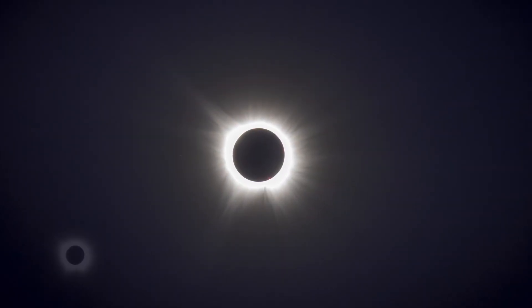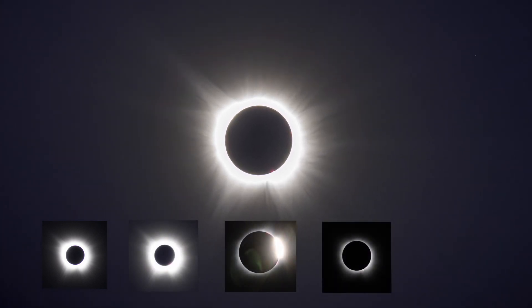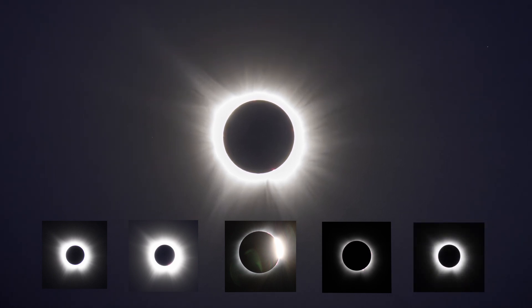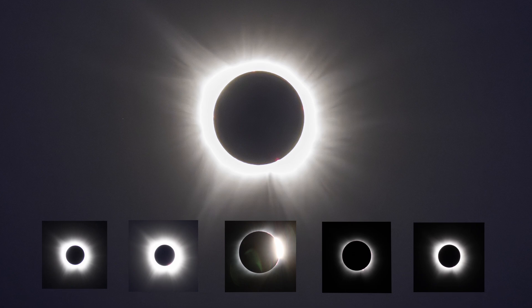Every year or two, there's a total eclipse of the sun somewhere in the world. If you've ever seen this awesome sight, you likely saw beautiful silver streamers stretching out from the sun. That's the solar corona, the sun's outermost layer, which only becomes visible when the bright inner disk of the sun is blocked.